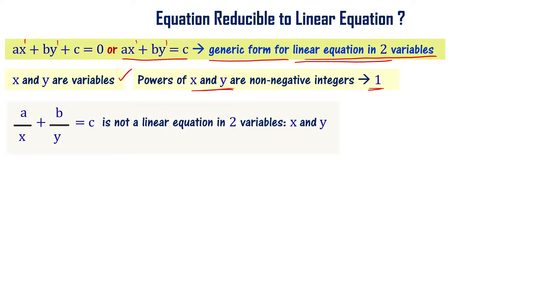Now, a by x plus b by y equal to c is an equation. It is not a linear equation in two variables x and y. Two variables are there, x and y, but this is not a linear equation. Why is it not a linear equation? This particular equation can be written as a times x power minus 1 plus b times y power minus 1 equal to c. 1 by x can be written as x power minus 1. You can call this x inverse.